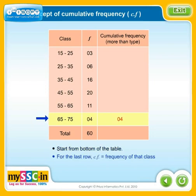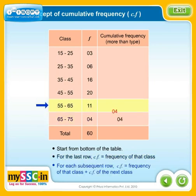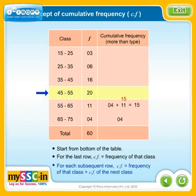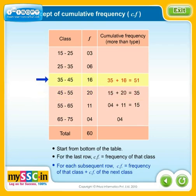For the last row, cumulative frequency is equal to the frequency of that class. For each subsequent class, cumulative frequency is equal to the frequency of that class plus the cumulative frequency of the next class, taken from bottom to top.